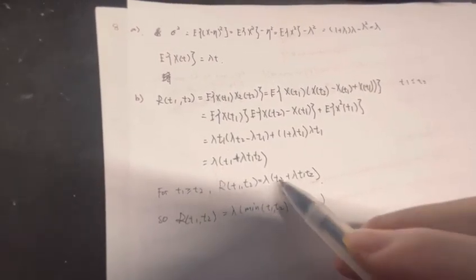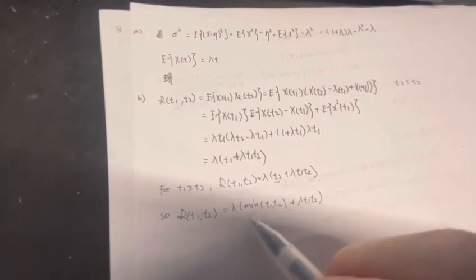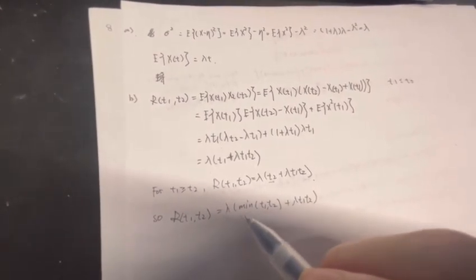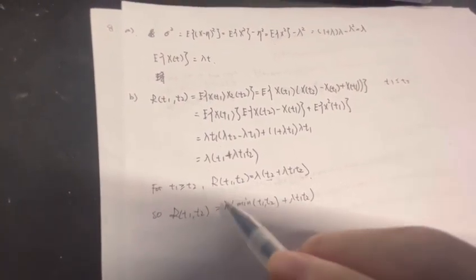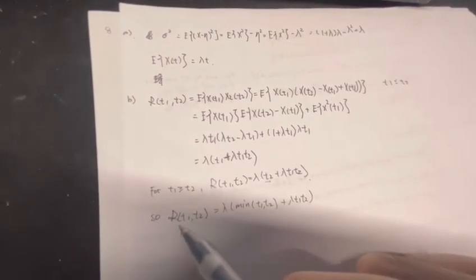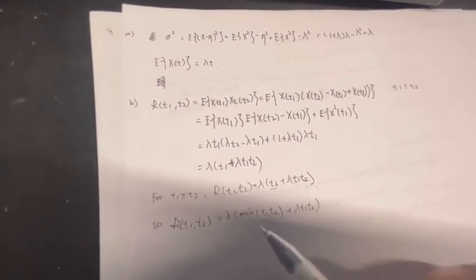So we can substitute the first part of this result as min(t1, t2) plus lambda times t1 times t2. This will be the final answer for R(t1,t2).